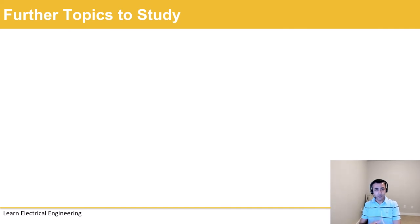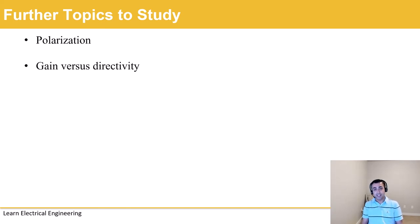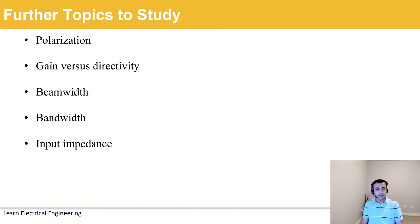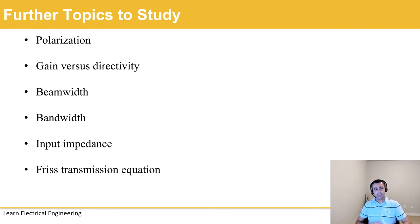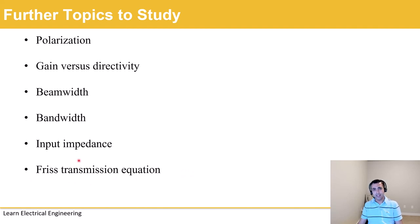In this lecture we went over how a basic antenna works and touched on a few antenna types. If you're interested in learning more about antennas, there are several topics you should study: polarization, gain versus directivity, antenna beamwidth, antenna bandwidth — which tells you the frequency range of operation — input impedance, which is important because you must ensure matching between the antenna and the source, and the Friis transmission equation, which is important for ensuring that a chosen antenna has enough gain to receive a usable signal and understanding the overall path loss concept.